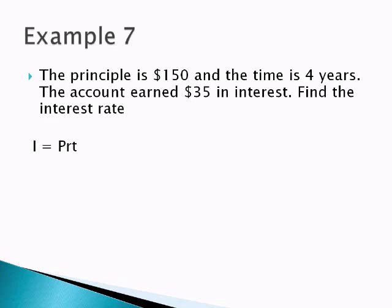Let's see what this problem says now. The principle is $150 and the time is 4 years. The account has earned $35 in interest. We are going to find the interest rate. Since I want to find the interest rate, I know that rate is R in the equation. So we're going to solve for R. To get the R by itself, we need to get rid of the P and the T, which are connected by multiplication. So we're going to divide.